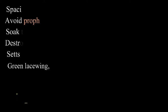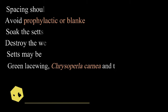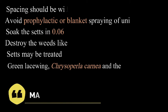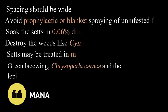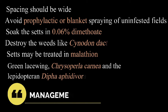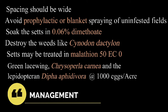Management: spacing should be wide; avoid prophylactic or blanket spraying of uninfested fields. Soak the sets in 0.06 percentage dimethoate for 15 minutes before planting. Destroy the weeds like Cynodon dactylon. If needed, the sets may be treated in malathion 50 EC 0.1 percentage solution for about 15 minutes.